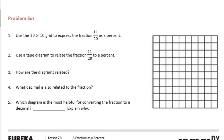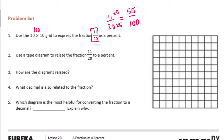Number 1: use the 10 by 10 grid to express the fraction 11/20ths as a percent. So we know that the 10 by 10 grid has 100 blocks in it. This is only represented out of 20, so I'm going to take this first and make it out of 100 — make it an equivalent fraction. And 20 times 5 gets me to 100, so I need to do 11 times 5, which is 55. So I'm going to end up shading in 55 blocks.